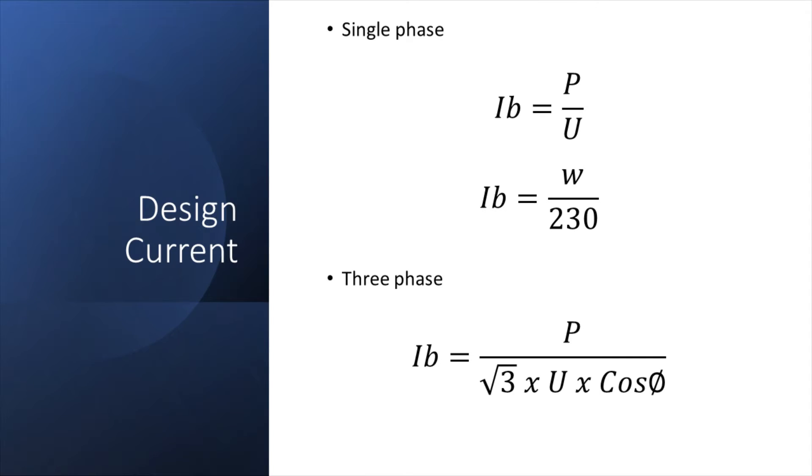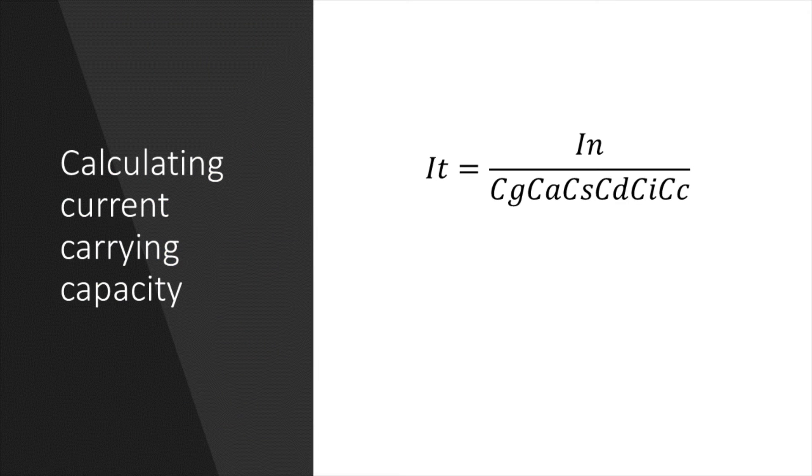First we need to calculate the design current using the calculations on the screen, which I'm sure you'll already be familiar with. Then we can select the rating of the protective device by selecting the device that is either equal to or greater than the design current, and then we can calculate the IZ, the current carrying capacity of the cable, using this formula by dividing the IN by any applicable correction factors.